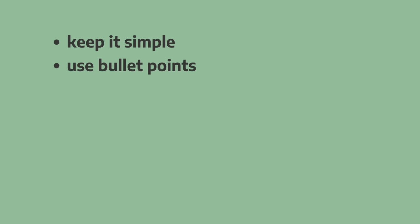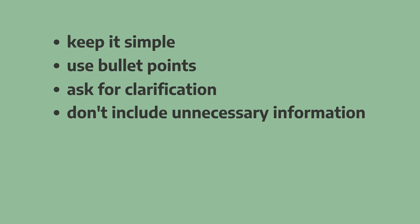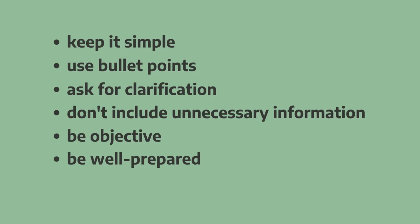The second tip is to use bullet points — bullet points make it easier for the reader to find important information. Tip number three: ask for clarification if you miss or don't understand something. Tip four: don't include unnecessary information. The fifth tip: be objective — don't include personal opinion. And finally, be well prepared — know the agenda and use a template to save time.